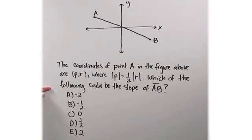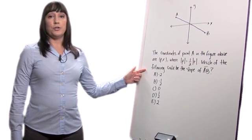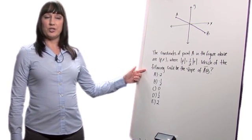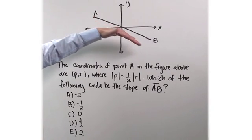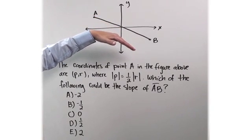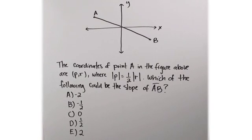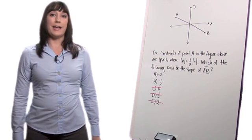Which of the following could be the slope of AB? Well, the first thing I'm going to do is use process of elimination. The slope of this line is negative because it goes down and to the right. Thus, answer choices C, D, and E are automatically out.